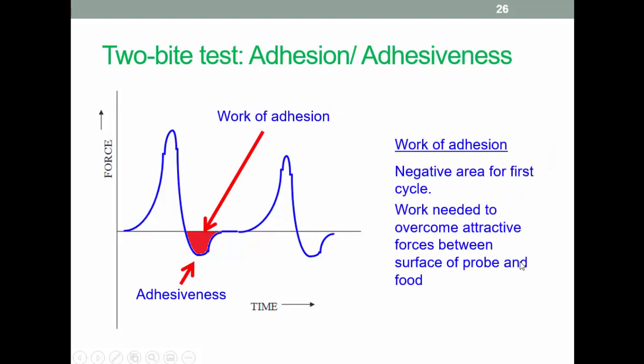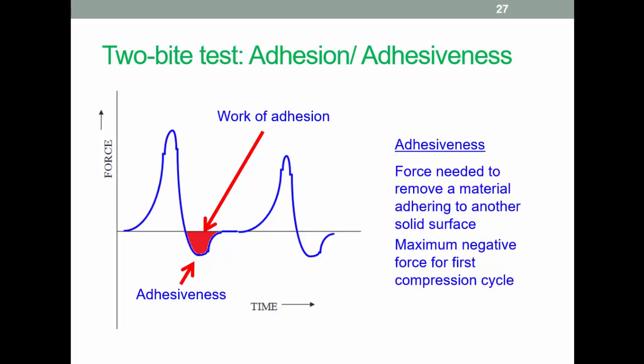Okay, adhesion and adhesiveness. Two key characteristics to be determined by the two-bite tester. We'll have a look at this later on in the case study on foods for dysphagia. This is food sticking to surfaces, essentially including the palate and other mouth parts. So there's an example there of adhesion on the previous slide and adhesiveness on this slide.